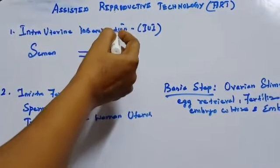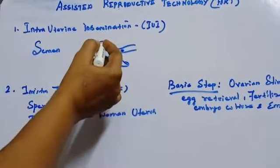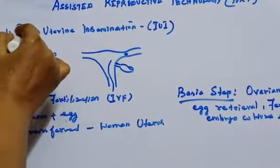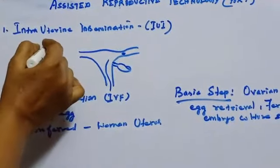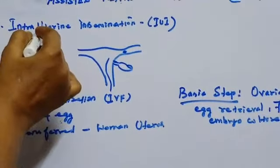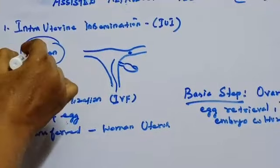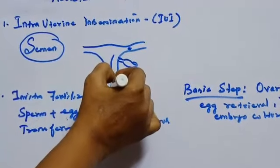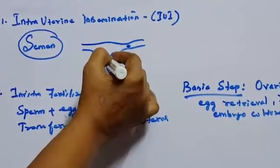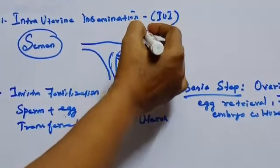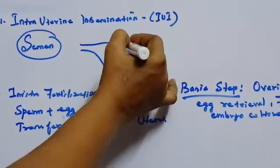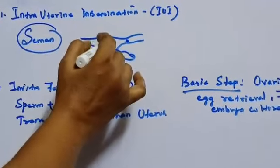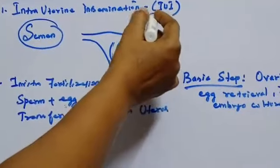First, we will see intrauterine insemination. This procedure is to treat infertile men — that is, men who have a low sperm count. Semen is collected from the husband or a healthy donor, and this semen is introduced into the uterus through the vagina by means of a catheter. The sperm then swims towards the fallopian tube, fertilizes the egg, and results in normal pregnancy.